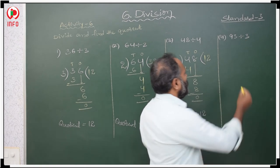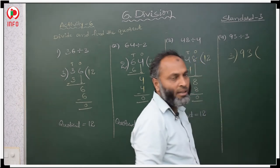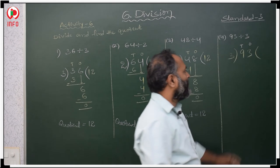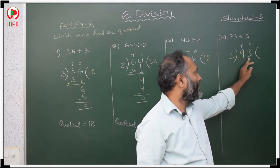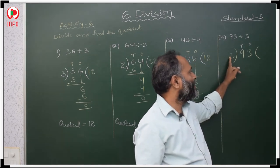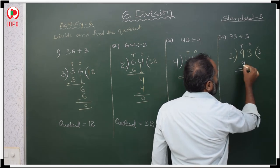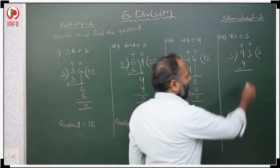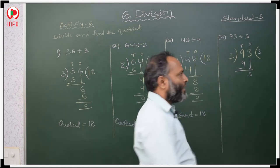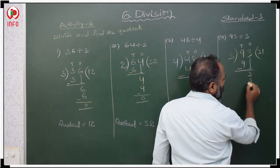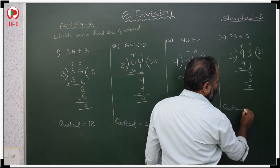Next: 93 divided by 3. This is in 1's place and 10's place. The extreme left digit 9 is greater than the divisor 3, so no need to take 93 at a time. In the 3 table: 3 threes are 9 tens, so write 3. Same number minus same number is 0. Copy the next digit 3. 3 ones are 3 ones — write 1. Same number minus same number is 0. Quotient is 31.